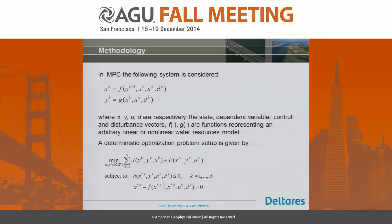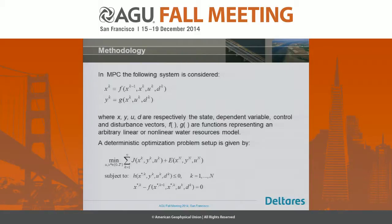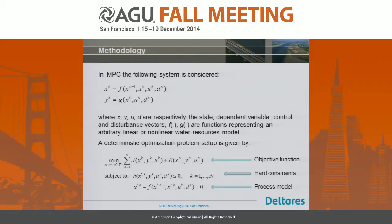Without going into too much detail on the methodology: the two equations represent a process model where X is a system state such as forebay elevation of a reservoir, U stands for control input such as a reservoir release, and D is a disturbance such as an inflow from an unregulated catchment. This can be any water resources model — linear or nonlinear. The equation below is the cost function expressing the quality of operation in mathematical terms, including hard constraints and the process model. That's the deterministic optimization problem.